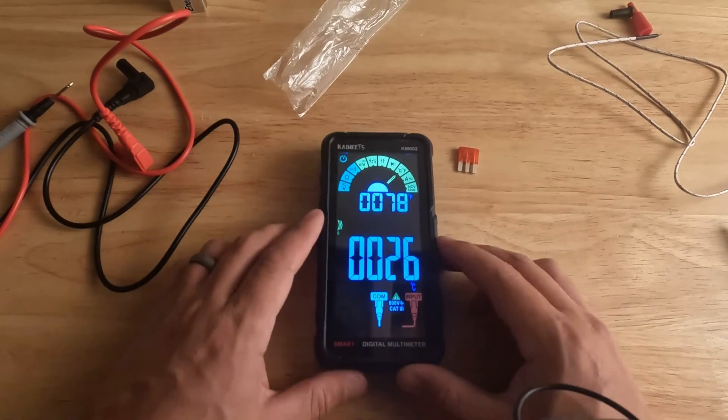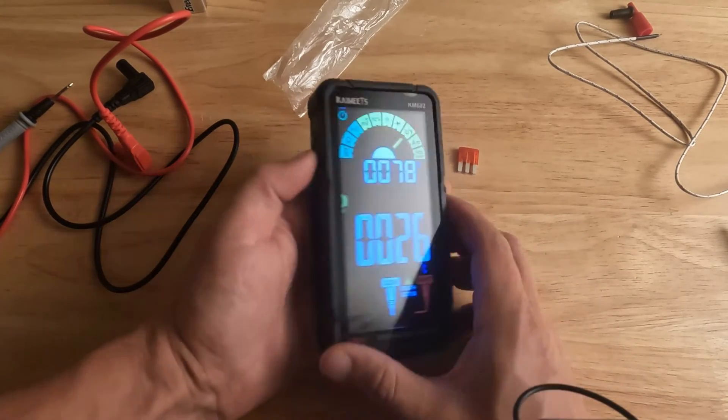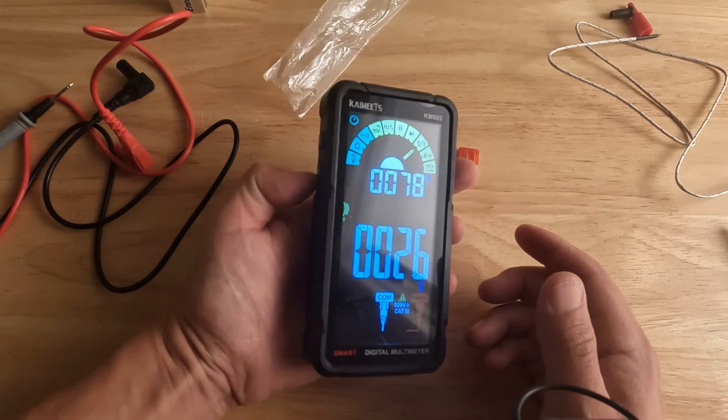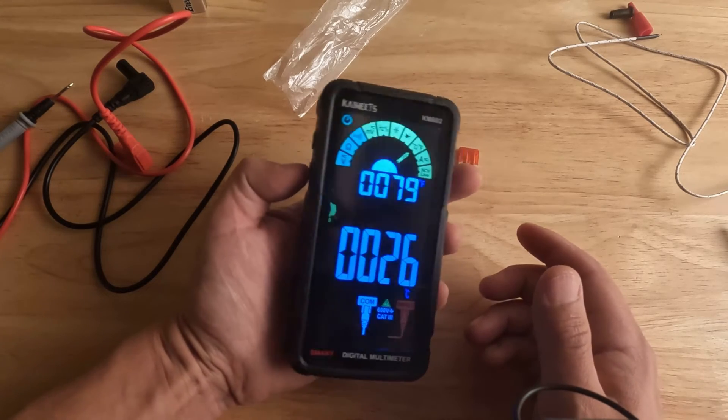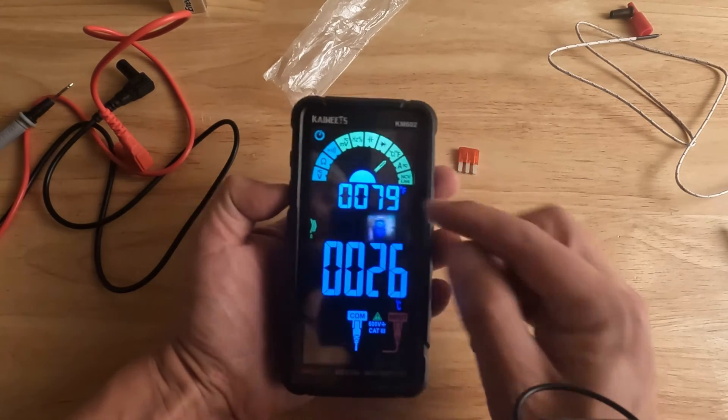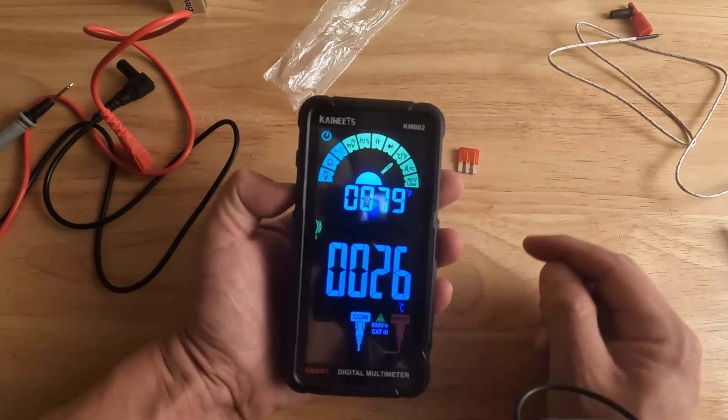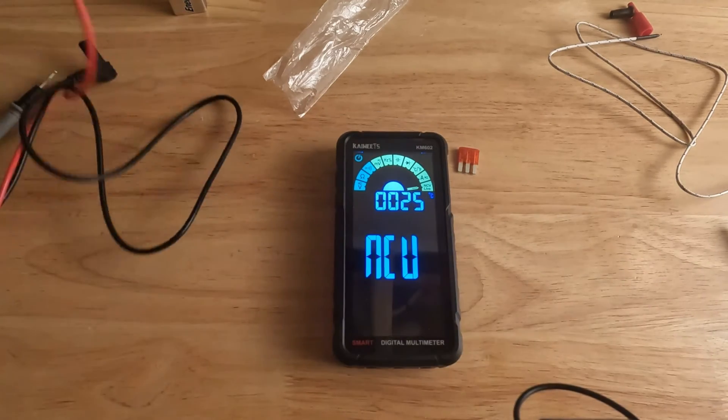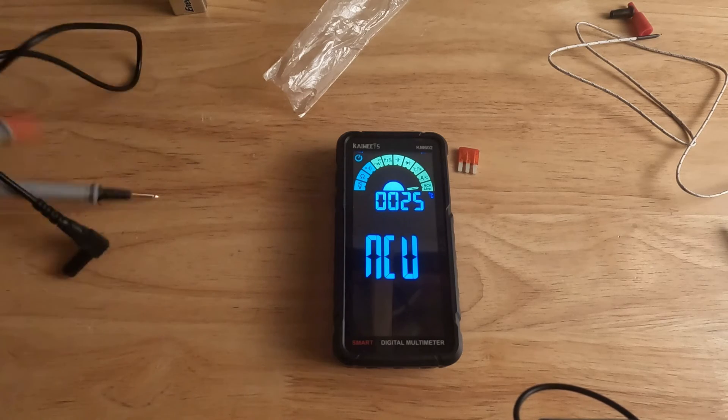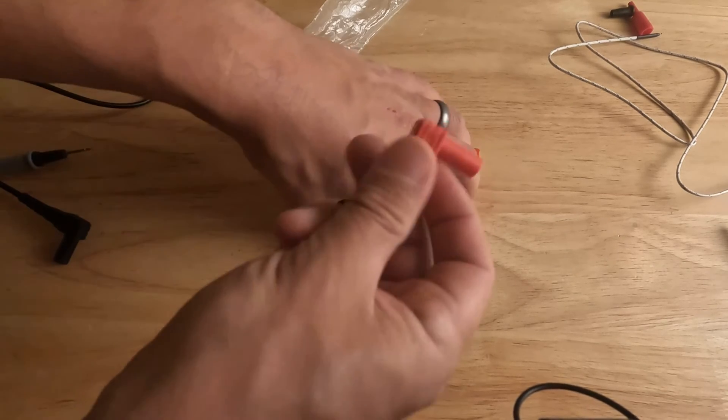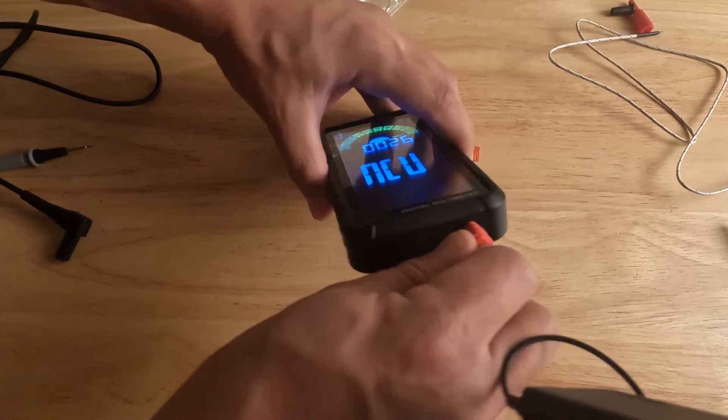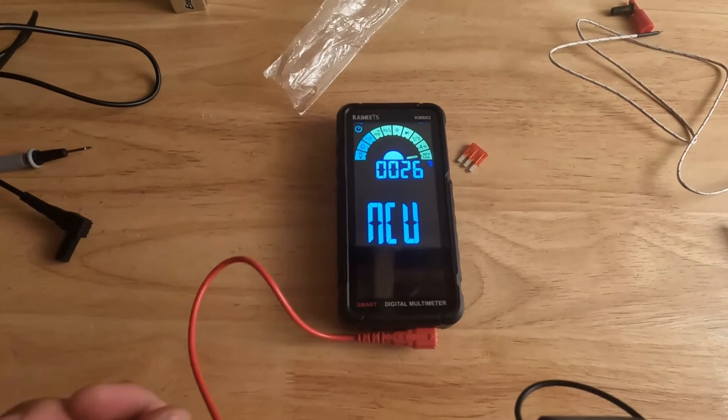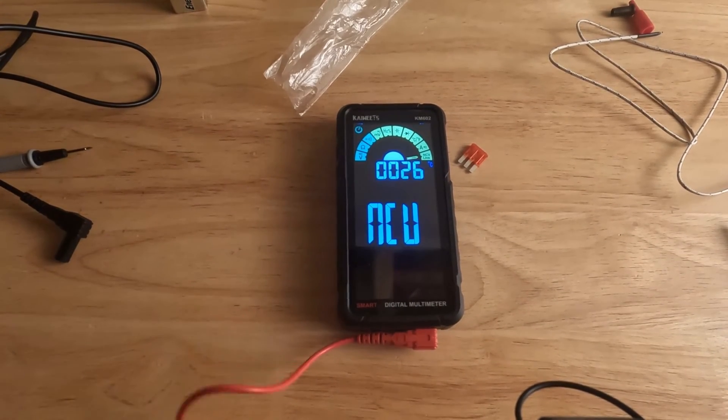Now we'll show you this also has a non-contact voltage tester. What we can do is hit this function button until the arrow goes all the way down to NCV live. And then for this, all we're going to want to do is plug in our red probe.